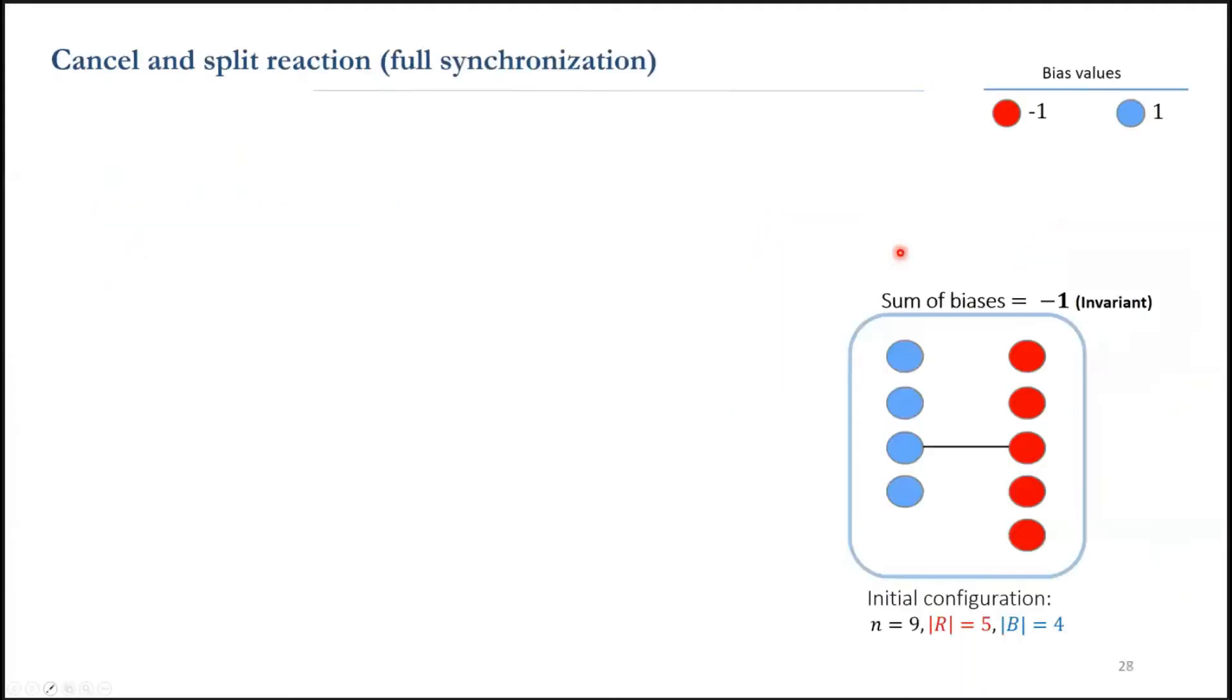Let's get back to the majority. Let's look at two types of essential reactions. First, when two agents with opposite opinions meet, they both go to neutral, and we call this a cancel reaction.